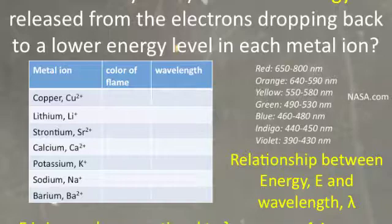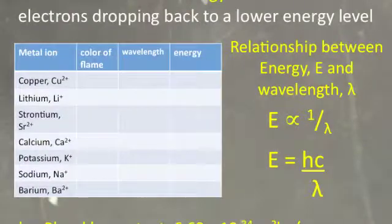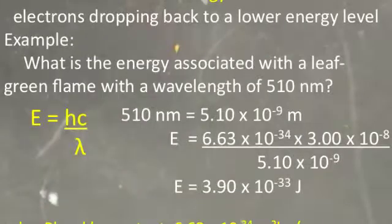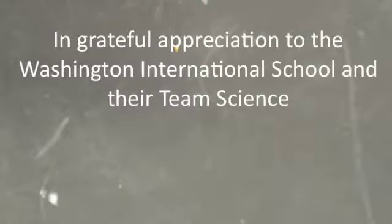Energy equals—and is proportional to the inverse of the wavelength—and the constant is h, Planck's constant, and c, the speed of light. So here's an example using a green color. Thank you again Washington International School for the science facilities.